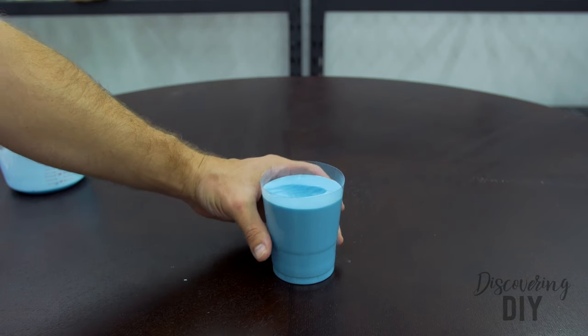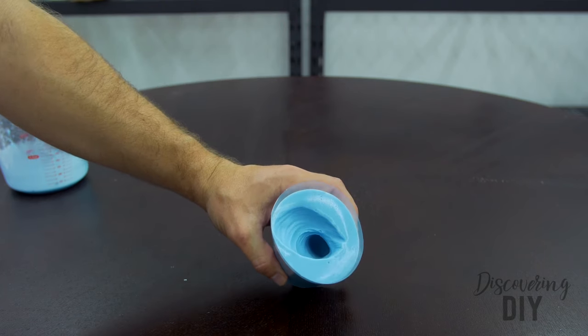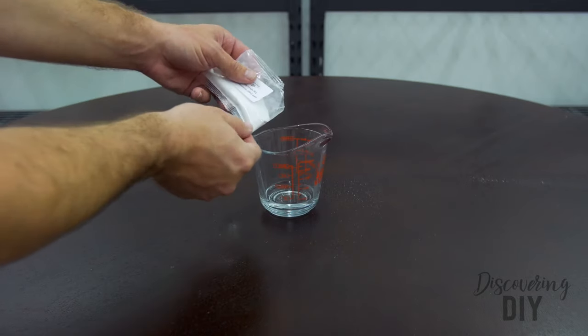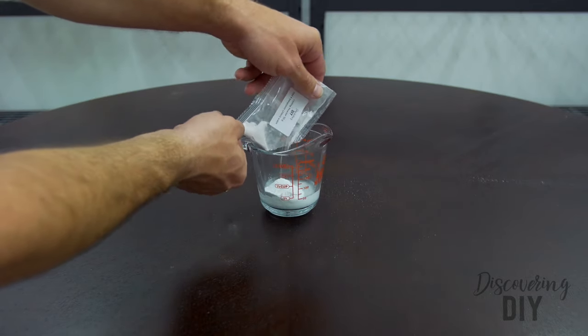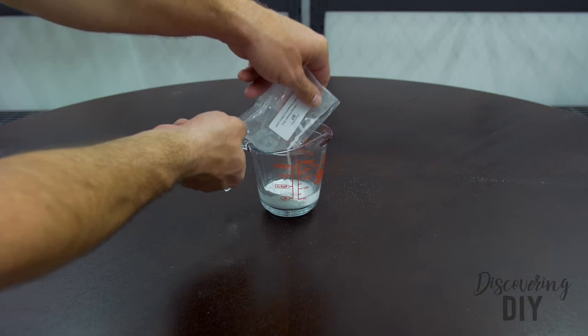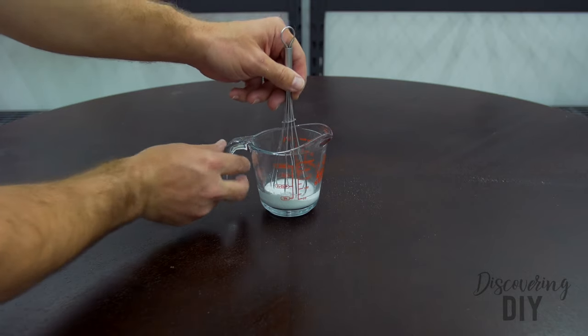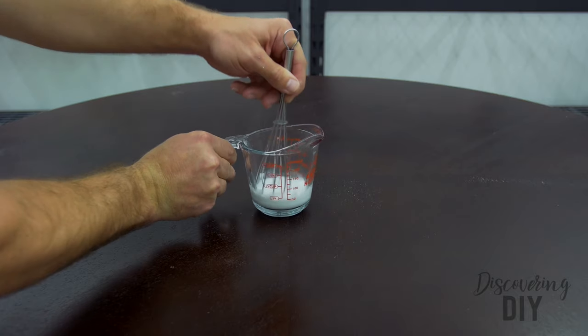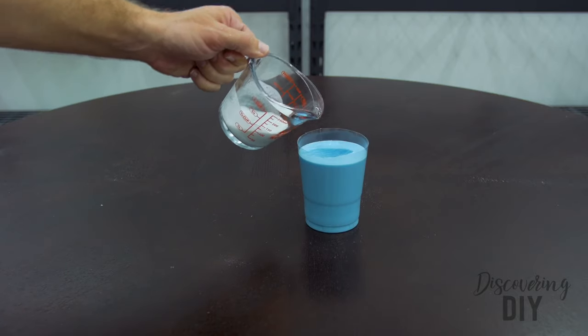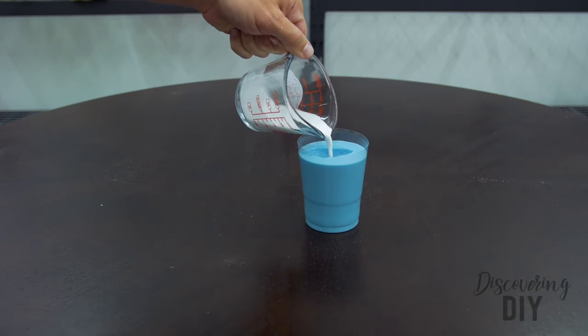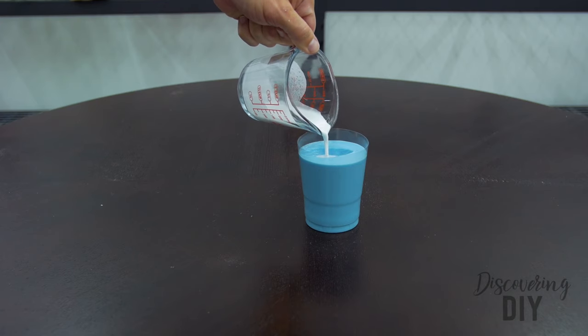You will then move to step two, which is creating your casting. Next, combine the 50 grams of Practice Casting Powder with four teaspoons of water into a mixing cup or bowl and mix for one minute. After mixing, immediately pour the Practice Casting Material into your Practice Mold and wait for ten minutes.